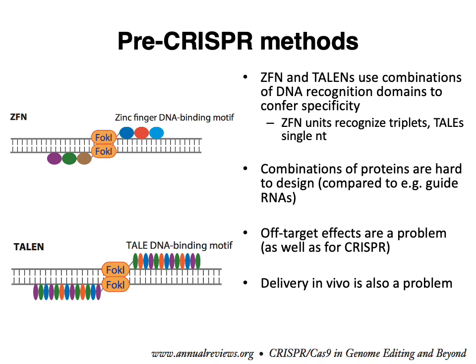One of the main reasons zinc fingers and TALENs were eclipsed by CRISPR-Cas9 is that it's much easier to design guide RNAs. CRISPR-Cas9 and similar systems are based on designing an RNA that's complementary to your target sequence, whereas with zinc fingers and TALENs you have to build essentially new proteins every time you want to target a new sequence, which is much more laborious. There are also problems with delivering these large protein complexes into cells, whereas delivery for CRISPR-Cas9 is potentially a bit easier.